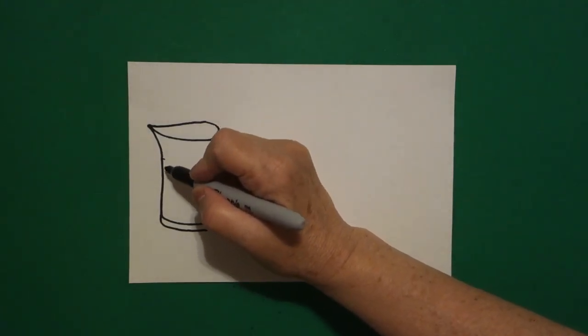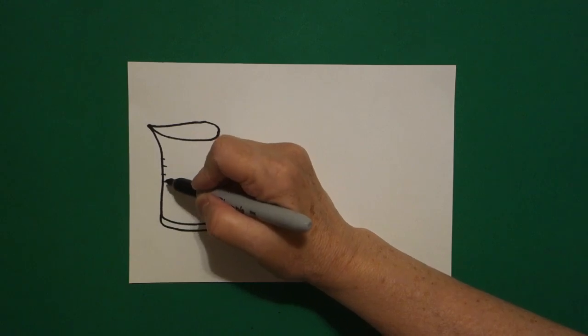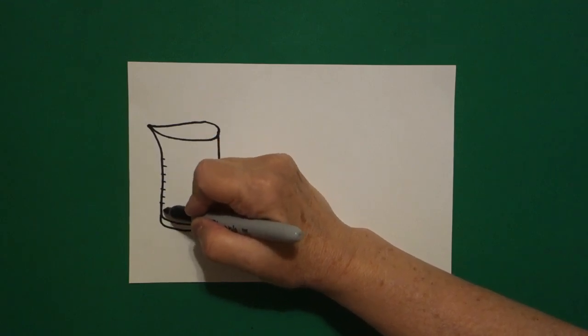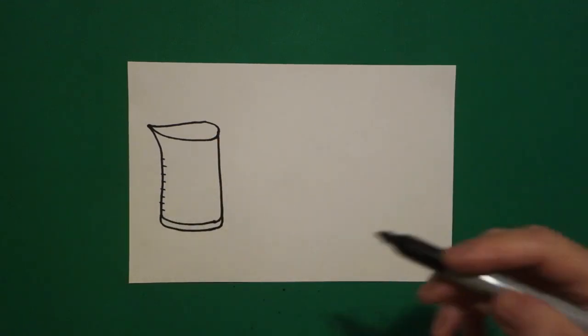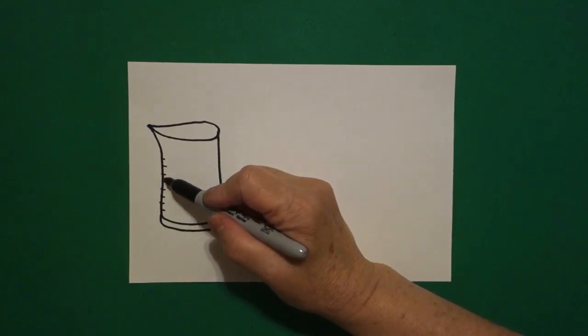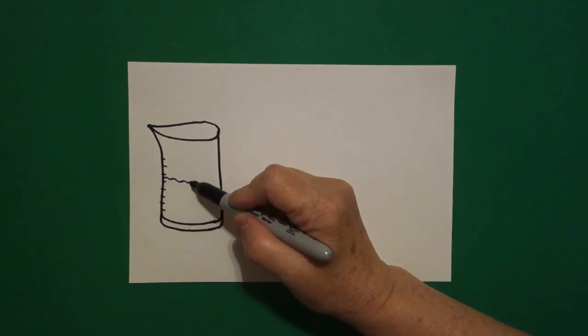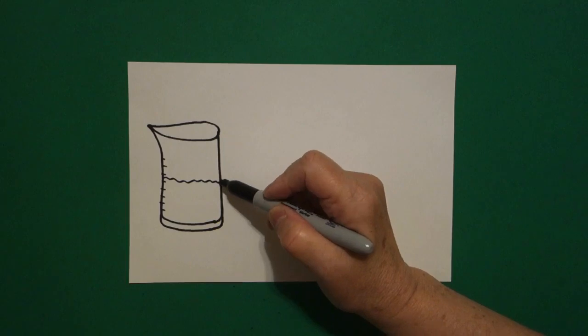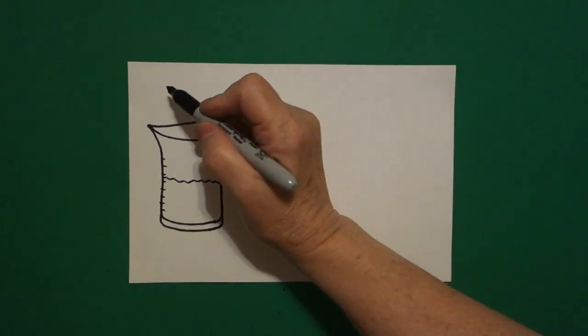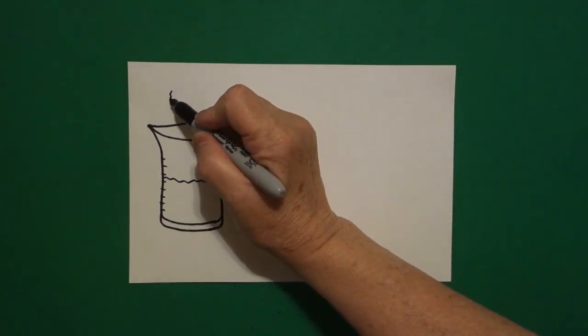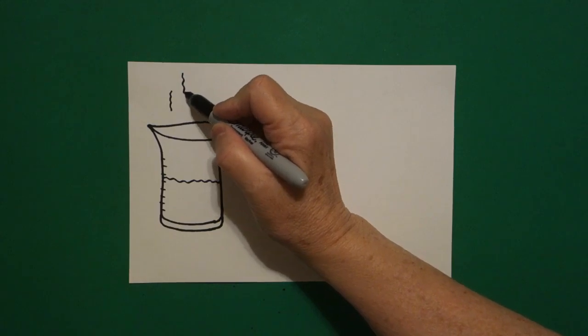On the left-hand side, I put little straight lines all the way down. I want it to look like there's something in it, so I'm going to draw just a wavy line across. And I want it to look like there's something stinky in it, so I'm going to draw some little wavy lines above.